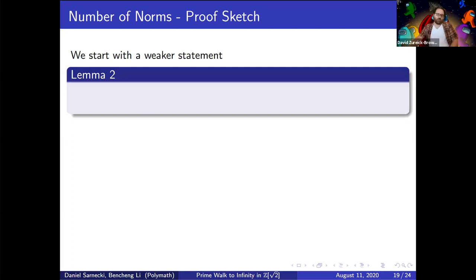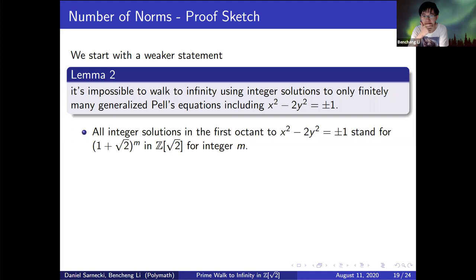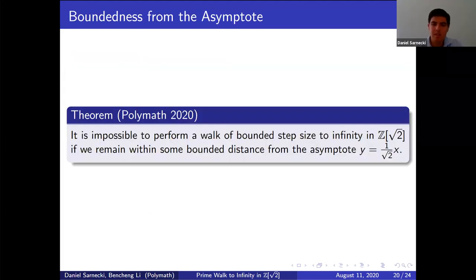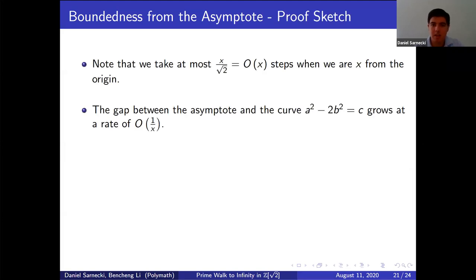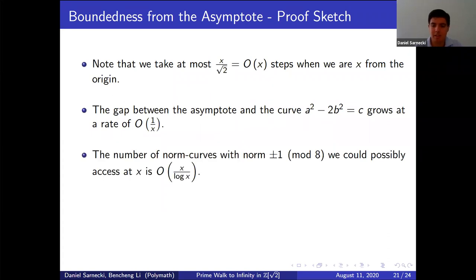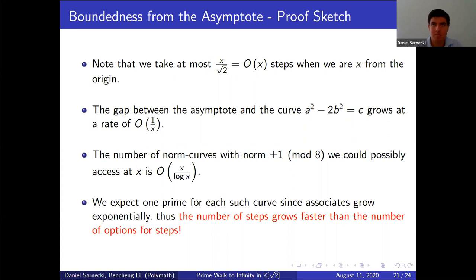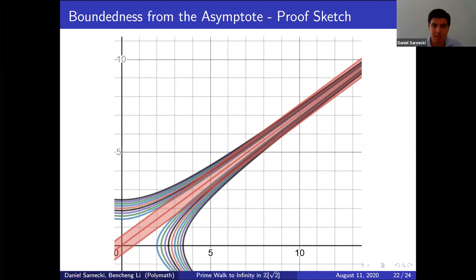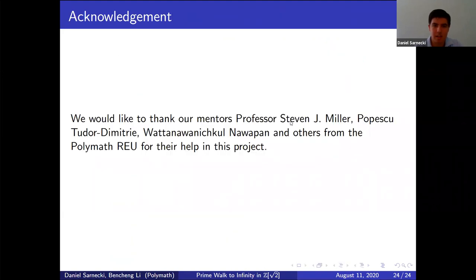The last theorem we had here was that it's actually impossible to perform a walk of bounded step size to infinity in Z[√2] if we remain within some bounded distance of the asymptote y = (1/√2)x. There's a proof sketch here. Basically, we compared the growth of the number of possible primes that we could walk on versus the number of steps that we take. We find that the growth of the number of solutions is faster than the number of steps that we take. Here's a picture where the curves that the primes could possibly lie on enter this bounded region. And that's it.